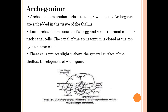The archegonium is the female reproductive part. Archegonia are produced close to the growing points and are embedded in the tissues of the thallus. Each archegonium consists of an egg, ventral canal cells, and four neck canal cells. The canal of the archegonium is closed at the top by four cover cells. The cells project slightly above the general surface of the thallus. You can see the structure of the archegonium in the diagram.